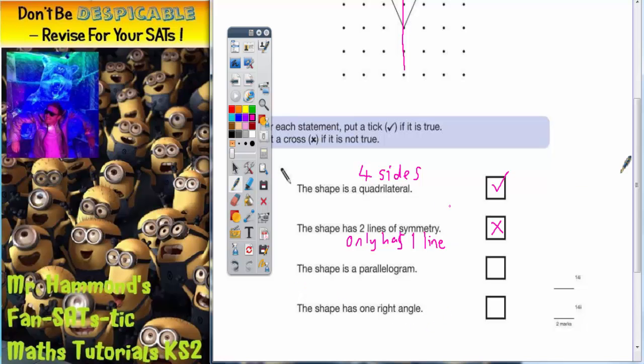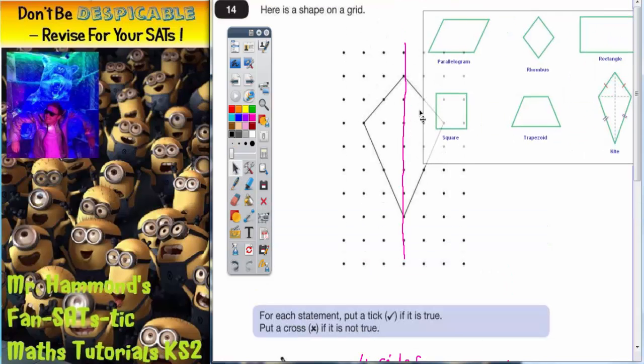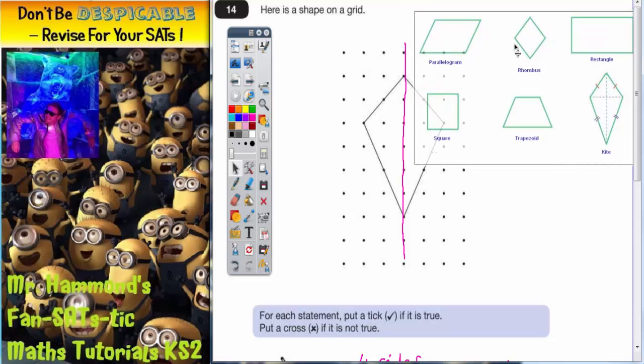Next question: the shape is a parallelogram. Now what we have got here is a quick look at the quadrilaterals. So we have got a parallelogram, a rhombus, a rectangle, a square, a trapezium—it says trapezoid there for the Americans, but in this country you normally call it a trapezium—and we have got a kite.